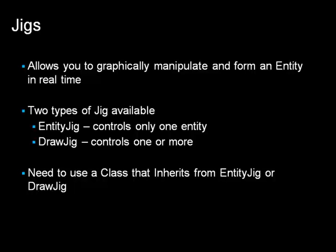In the real world, a jig is a frame to which you can attach an item, hold it firm, and then manipulate or form it into position. In AutoCAD, a jig is very similar — it's an API class which you can use to visually manipulate an entity into place. A good example of this is the circle command: you pick the center point, then select the radius, and you can visually see the radius before you actually select it.